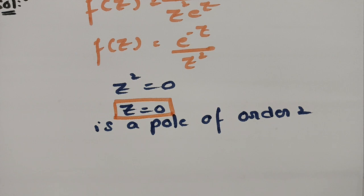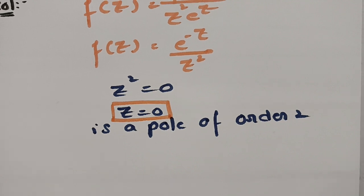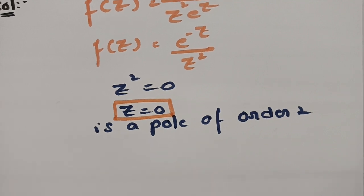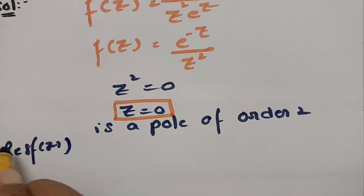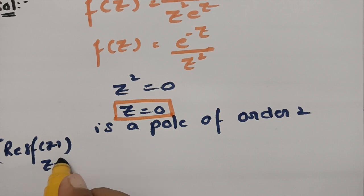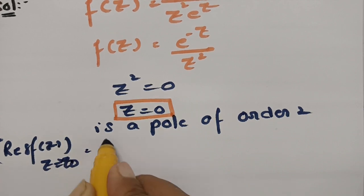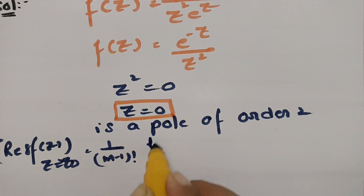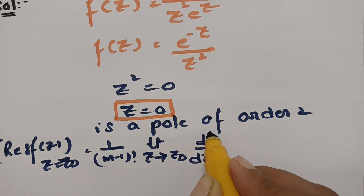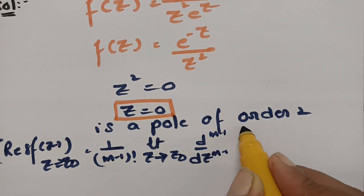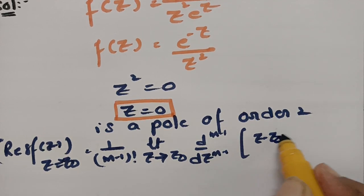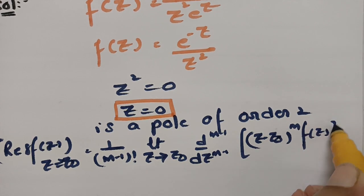Therefore, we have to find the residues for the given function. For finding residues, we use the formula: the residue at z = z₀ is equal to 1 over (m−1)! times the limit as z tends to z₀ of the (m−1)-th derivative of (z − z₀)^m times f(z).